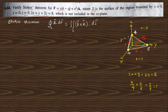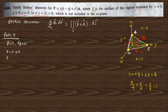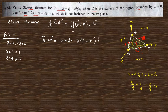First, we need to find the closed line integral along each path. Along path 1, y=0, so dy=0. x changes from 0 to 4 and z changes from 4 to 0. The expression A·dr gives xz dx − y dy + x²y dz. Dotting with dr = i dx + j dy + k dz gives xz dx − y dy + x²y dz.